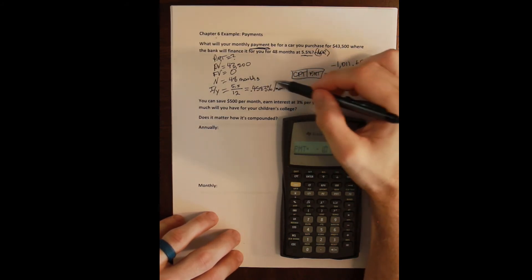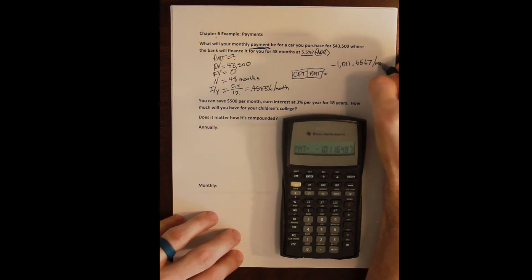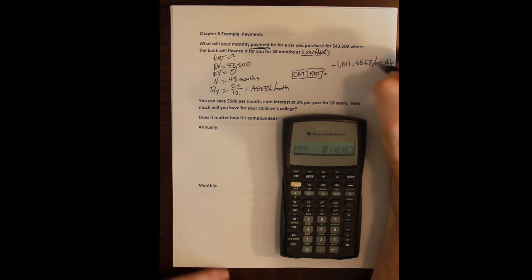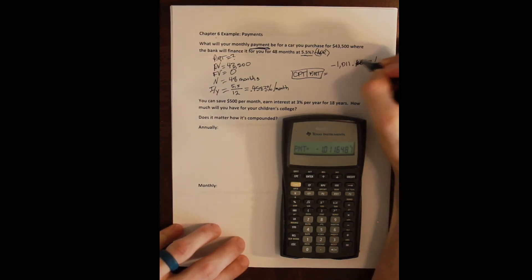And then we compute our payment and we get negative one thousand eleven point six five six seven. And because our inputs are months this is a monthly rate. So we're going to have to pay the bank one thousand eleven dollars and some change.